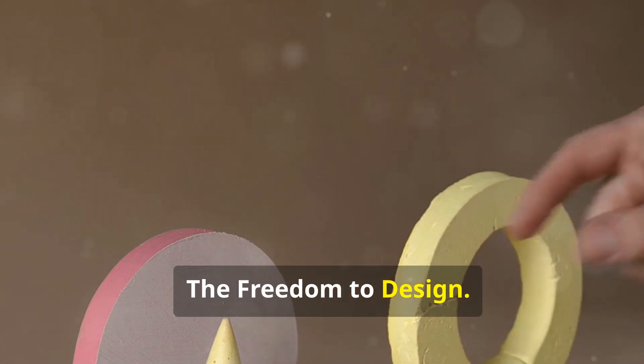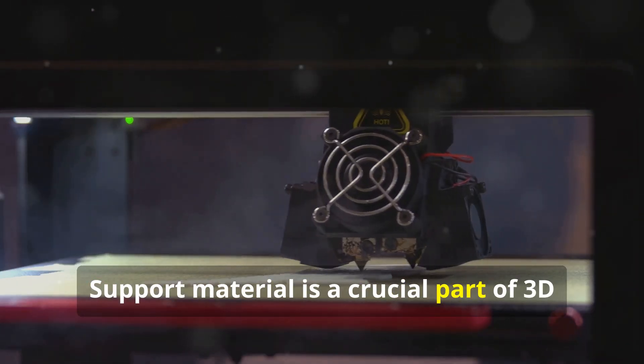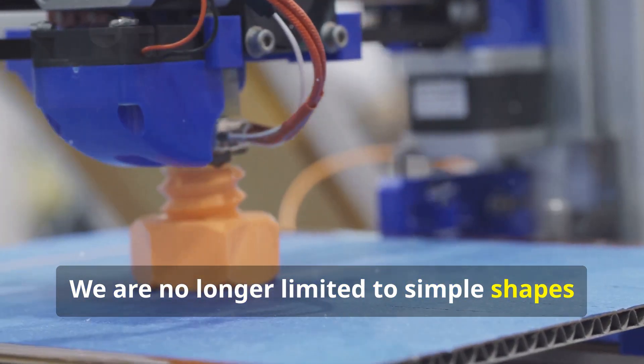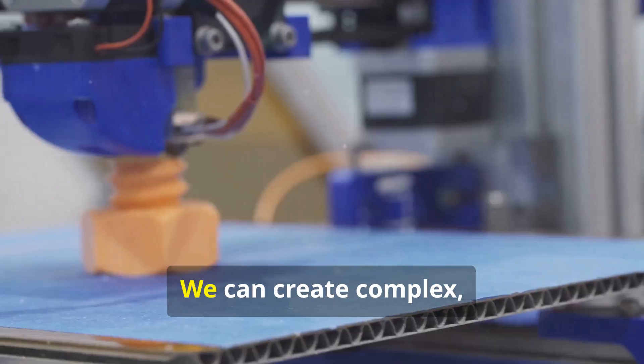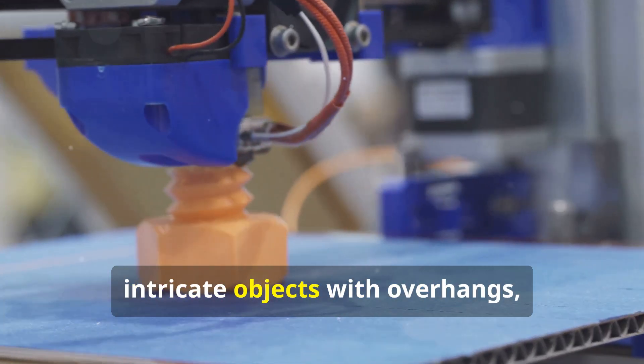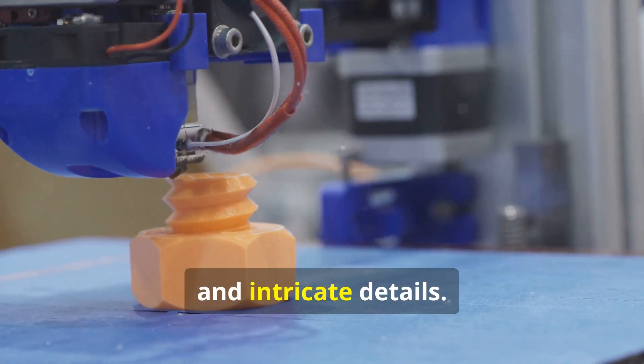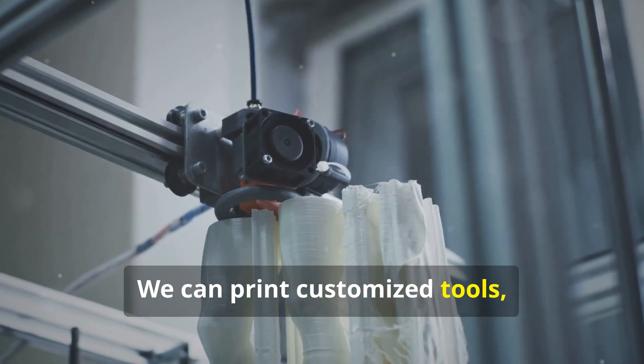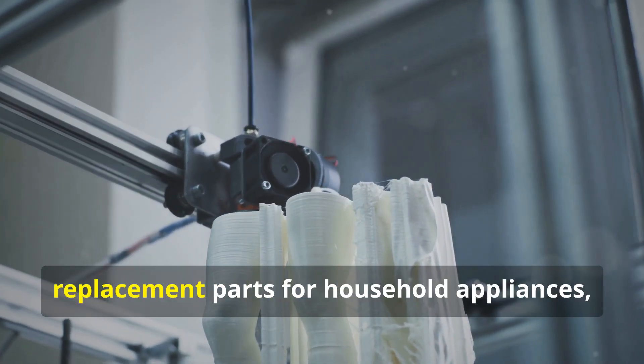The freedom to design: support material is a crucial part of 3D printing because it gives us design freedom. We are no longer limited to simple shapes that can stand on their own. We can create complex, intricate objects with overhangs, cavities, and intricate details. This opens up a world of possibilities. We can print customized tools, intricate jewelry, replacement parts for household appliances, and even medical implants tailored to an individual patient.